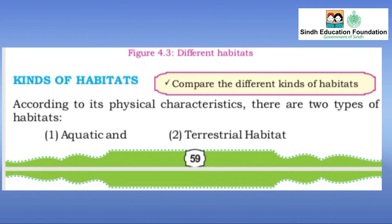Terrestrial habitat. Organisms living on land obtain their resources from soil, land and air. Terrestrial habitats are forest, grassland, desert and tundra.